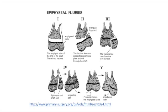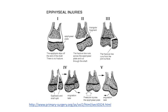The fourth type of epiphyseal injury is where the epiphysis and part of the shaft split. This happens particularly at the lateral condyle of the humerus. Perfect realignment is essential to treatment and open surgery is often required.